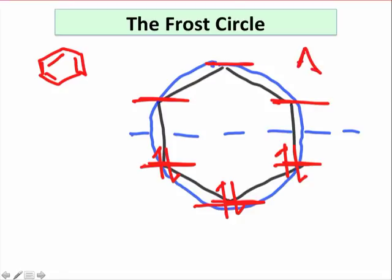Notice that levels above the horizontal diameter are net antibonding, while levels below the horizontal diameter are net bonding.